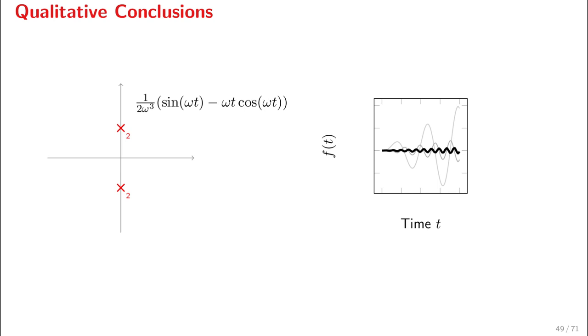Secondly, we see that the rate of growth changes too—it grows slower as we increase the imaginary component. Now if we move to the left of the imaginary axis, if we have a negative real part, we see that in fact the time response, the time domain signal, goes to zero.